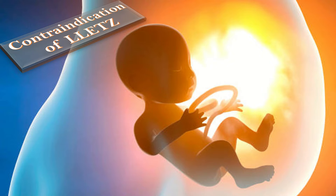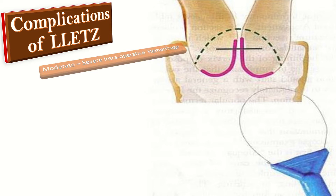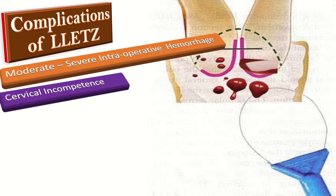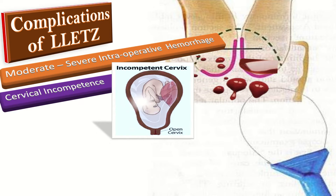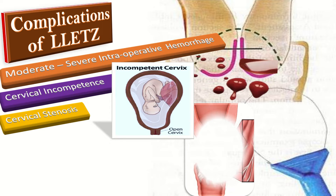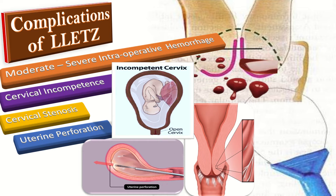What are the complications of large loop excision of the transformation zone? First is moderate to severe intraoperative hemorrhage. Secondly, cervical incompetence leading to miscarriages. Thirdly, cervical stenosis, and fourthly, perforation of the uterus — though perforation is very rare and occurs mostly in menopausal women.